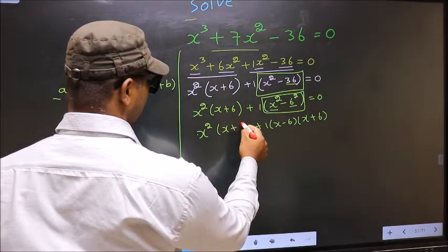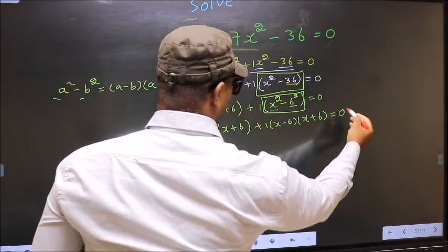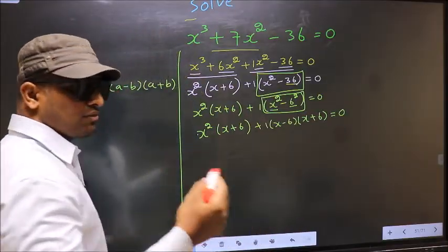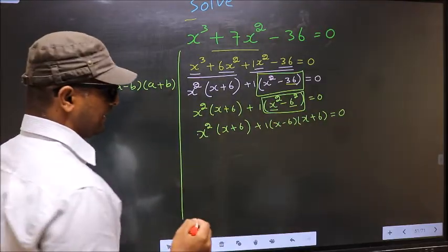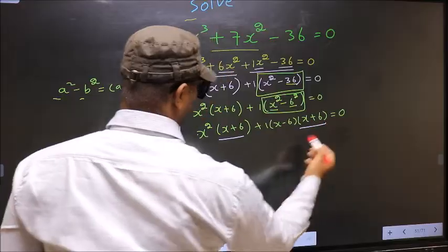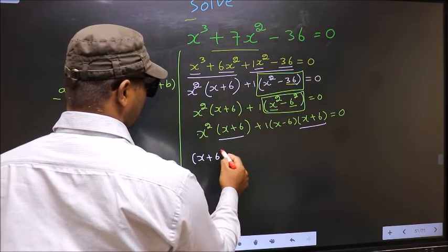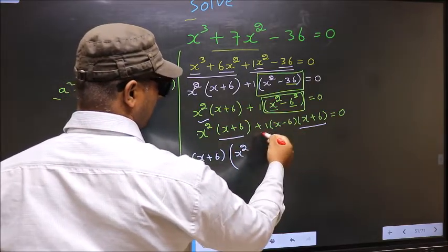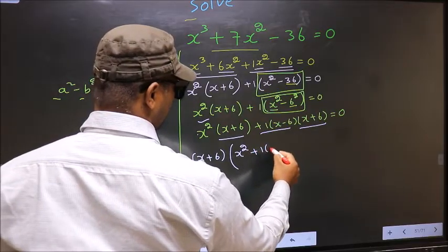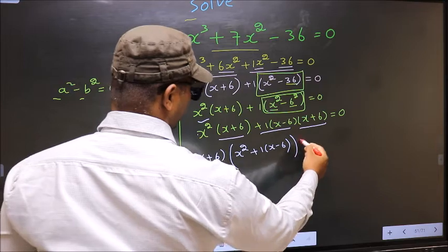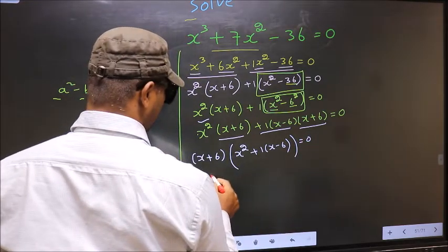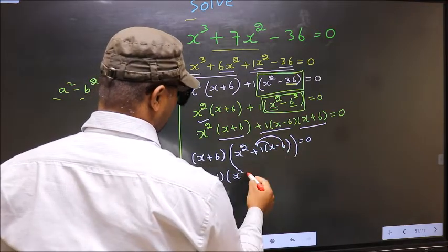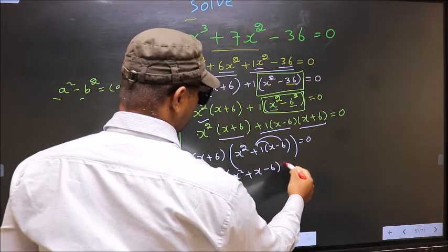This same x square times x plus 6 equal to 0. Now, from this entire equation, what can be taken out common is x plus 6. So x plus 6 you write outside. Over here we are left with x square, and over here we are left with 1 times x minus 6 equal to 0. x plus 6 times x square plus x minus 6 equal to 0.